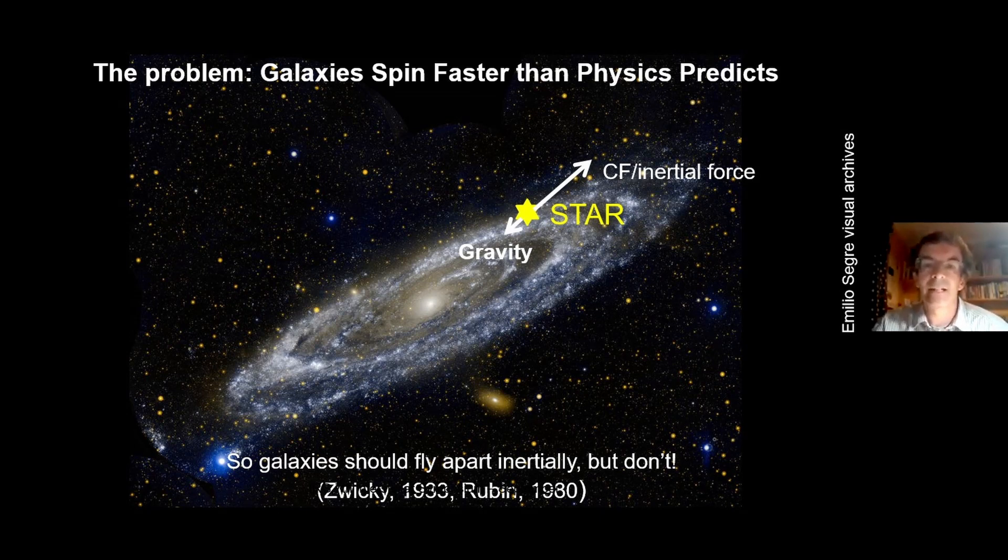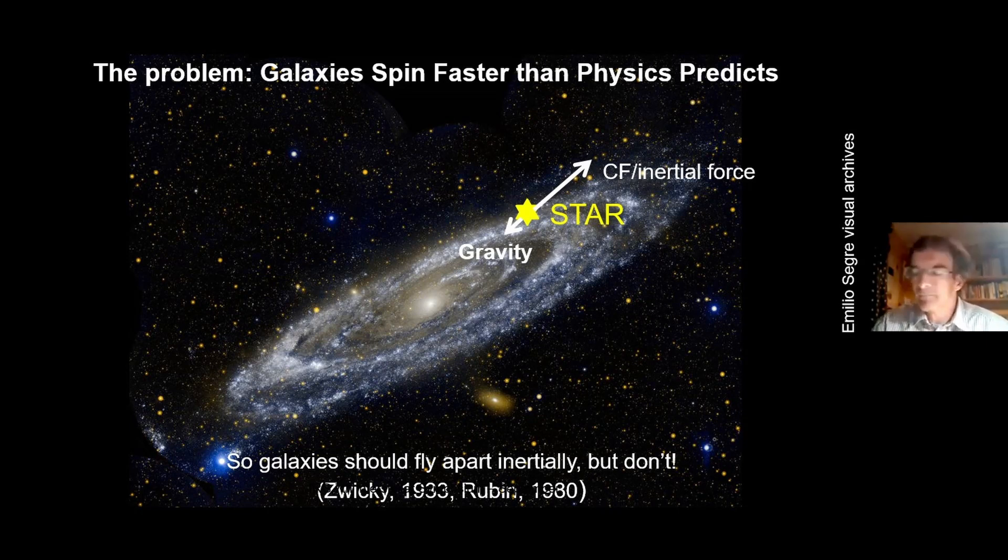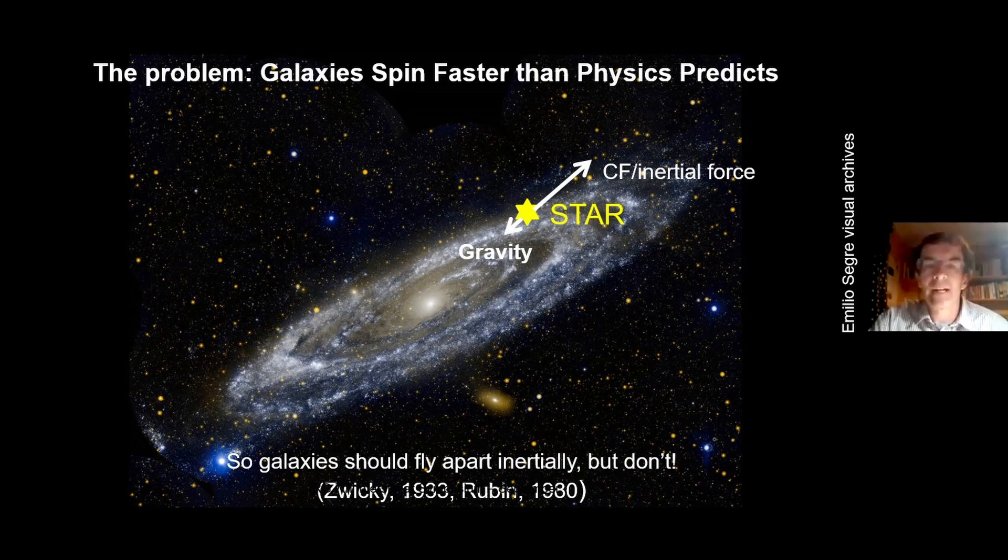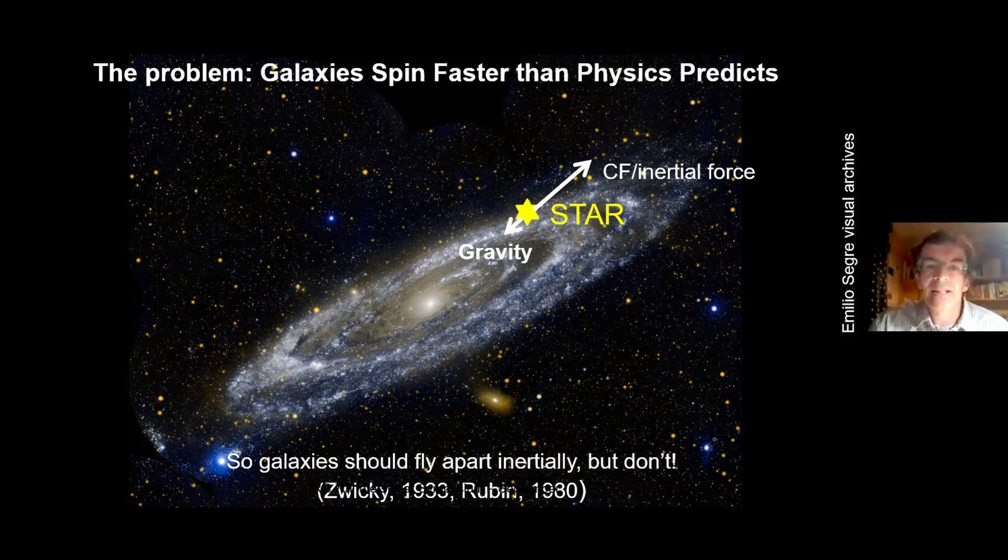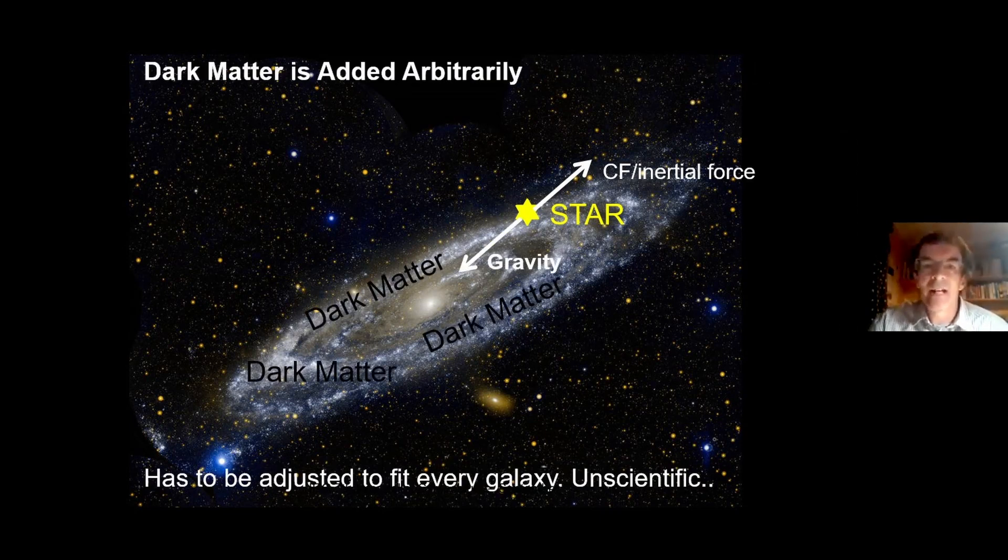Just to show you where I started, this is the Andromeda galaxy. We can look at the Doppler effect and the speed of stars going around the galaxy and work out the centrifugal force, the inertial forces, and they're extremely large, much larger than the gravitational force pulling them into the center given the visible matter that we can see. So the problem is that galaxies should be exploding, but they aren't.